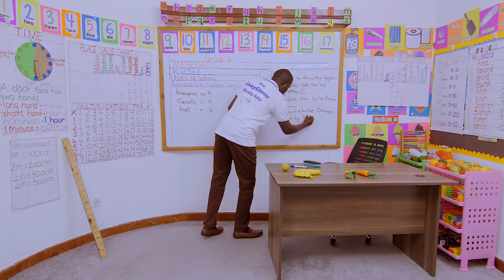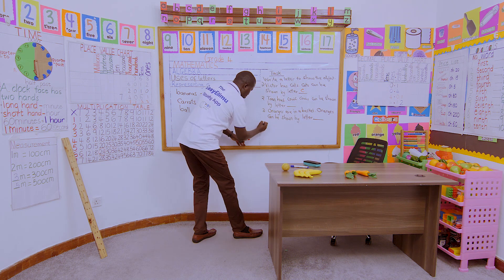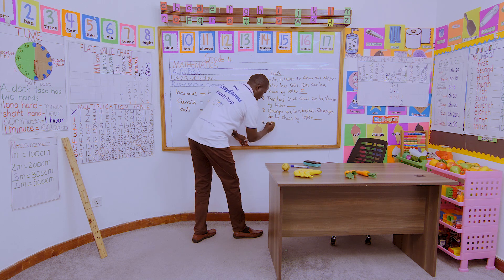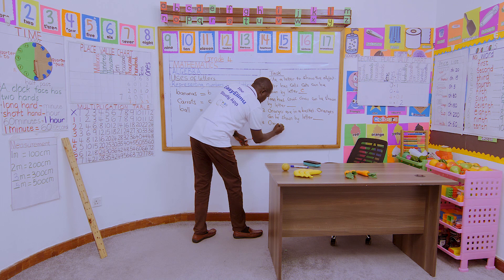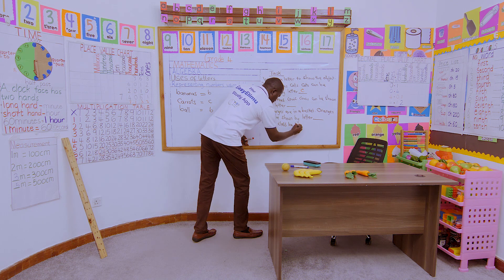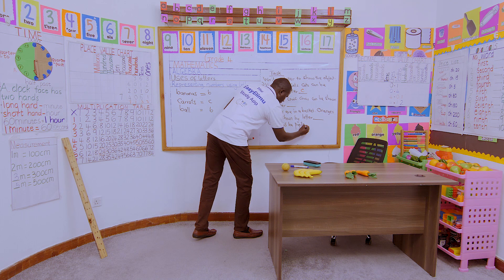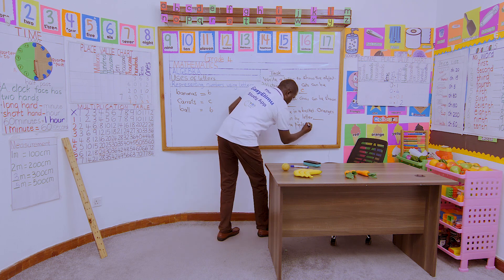Which letter can we use to show oranges? You can choose one. Number four: our class has pupils — all learners. So pupils can be shown by a letter.